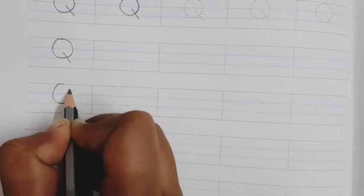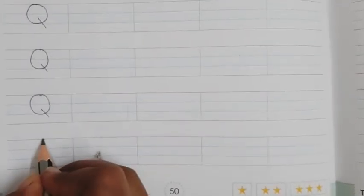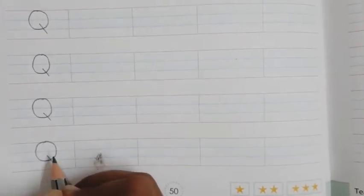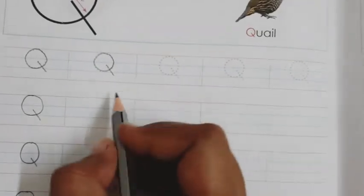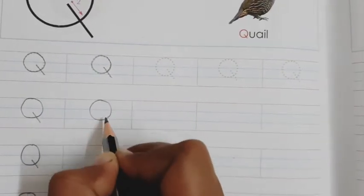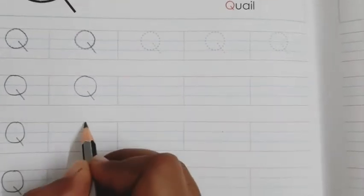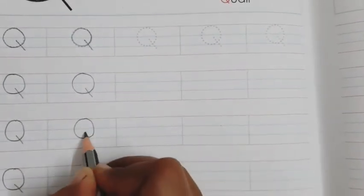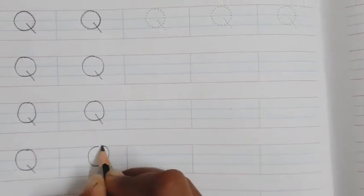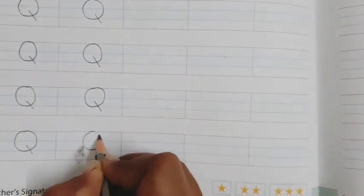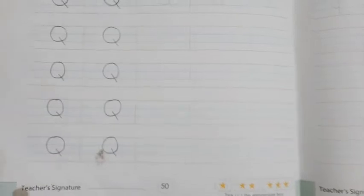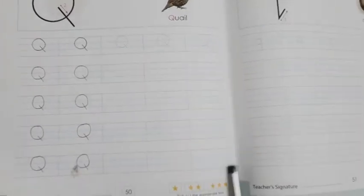Q, qua, quail. Q, qua, quiet. Q, qua, quail evolve. Q, qua, quilt. Q, qua, question mark. Q, qua, quiet. Q, qua, queen. Okay students, so in the same way you have to complete the whole page.